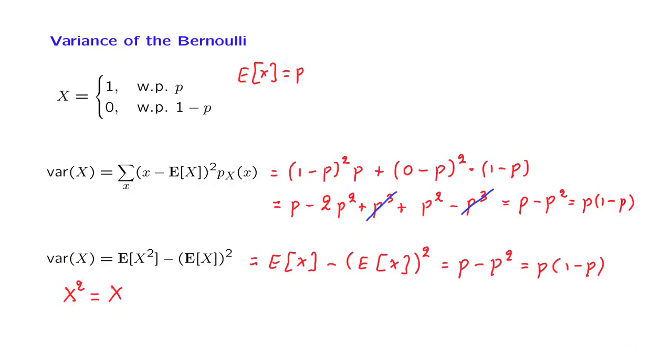Now the form of the variance of the Bernoulli random variable has an interesting dependence on p. It's instructive to plot it as a function of p. So this is a plot of the variance of the Bernoulli as a function of p, as p ranges between 0 and 1. p times (1 minus p) is a parabola, and it's a parabola that is 0 when p is either 0 or 1, and it has this particular shape. And the peak of this parabola occurs when p is equal to 1 half, in which case the variance is 1 fourth.